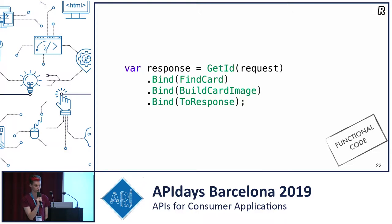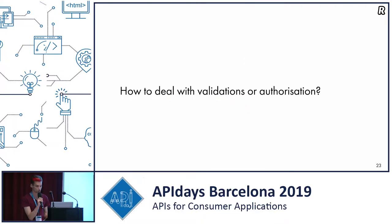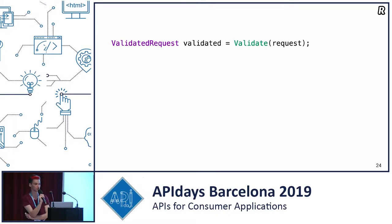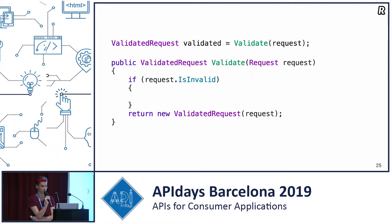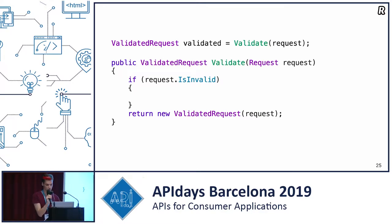But there are things that are hard to organize as a pure function — for example, validations and authorizations. It's a bit hard to write validation as a pure function. For example, you have a function that takes a request and returns something named a validated request, so you can be sure that if something has this type, it's an absolutely valid request. But how does such a function work? What can it return if there is no valid request? In case the request is valid, it returns a validated request. But what do you do if the request is not valid? There are two answers: one is fully functional, and another is the common developer approach.